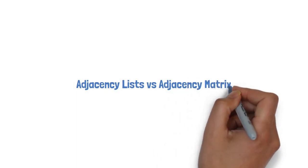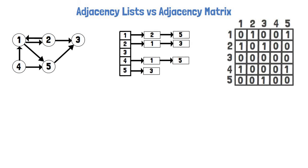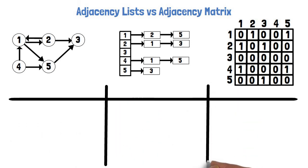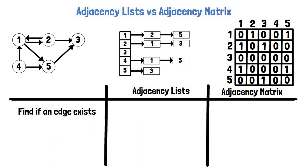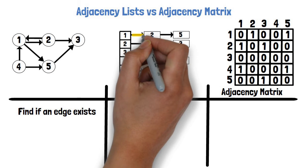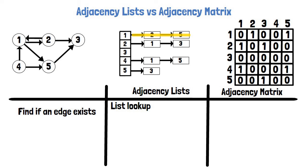Let's compare the two representations. First, what does it take to find if an edge exists? For example, to check if there is an edge from 1 to 5: in the adjacency list, we need to traverse the adjacency list of vertex 1, which in the worst case is O of the number of neighbors. In the adjacency matrix, we can directly check cell 1-5, which is O(1). So it is faster using the adjacency matrix.